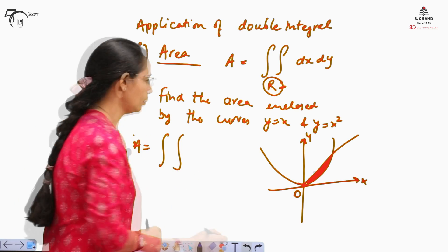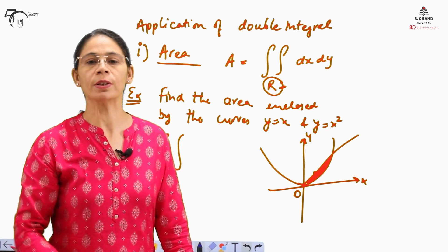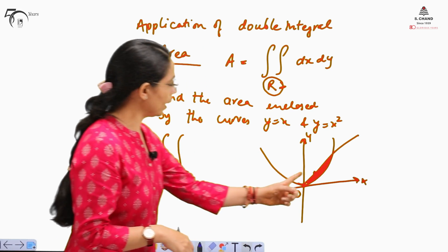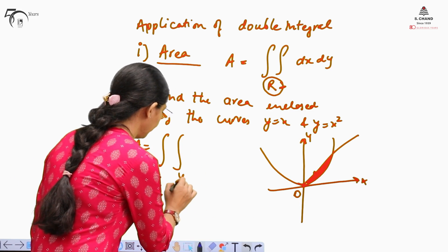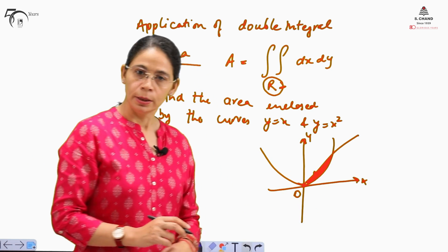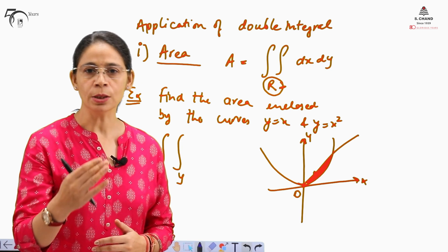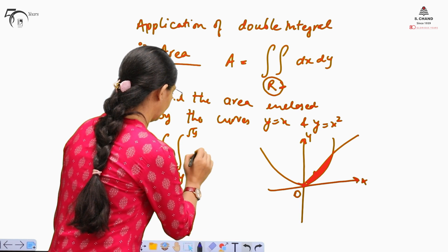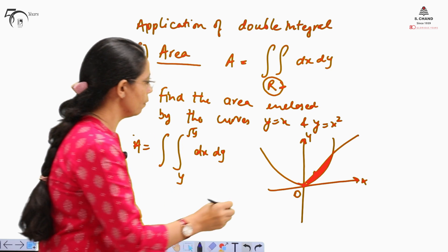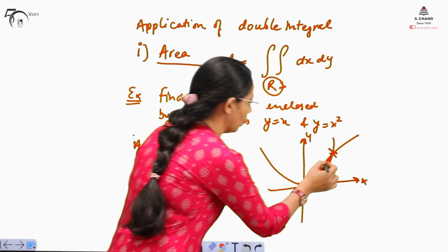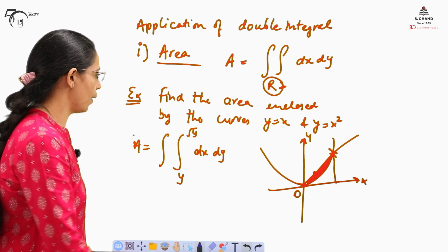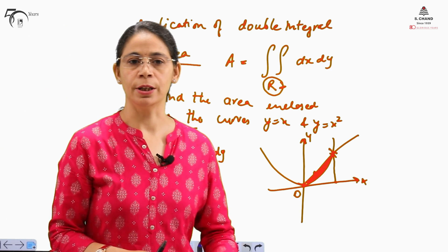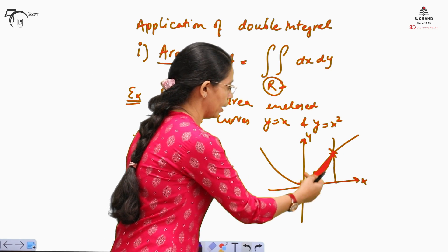Since we are taking strips parallel to the x-axis, we integrate with respect to x first, so the limits for x are written in terms of y. The lower end of the strip lies on the line y equal to x, so the lower limit is x equal to y. The upper end lies on the parabola y equal to x squared, so in the first quadrant x goes from y to square root of y. For dy, x moves from 0 to 1.